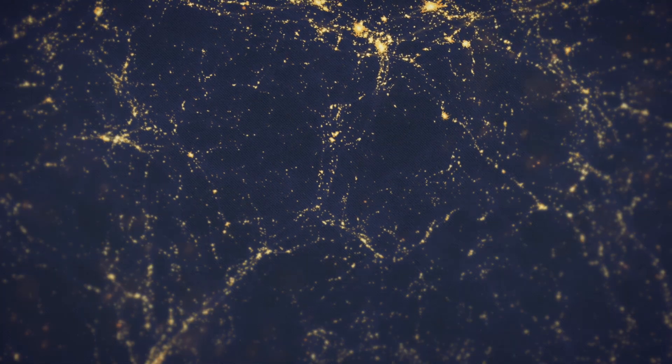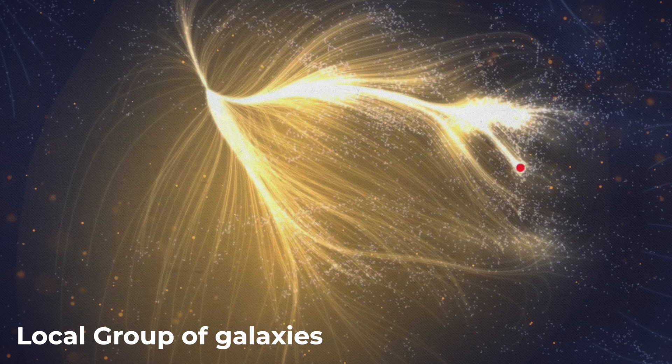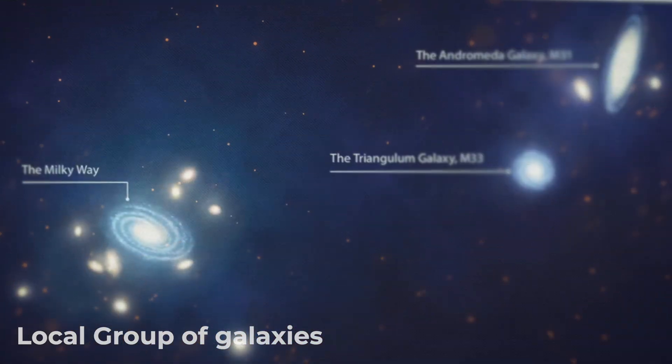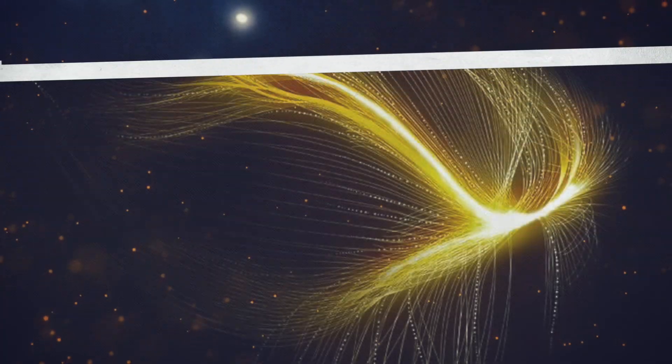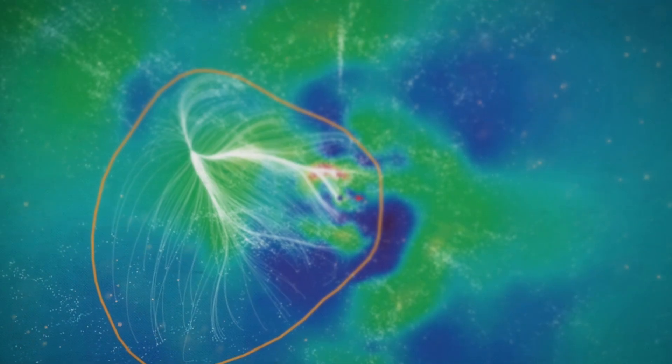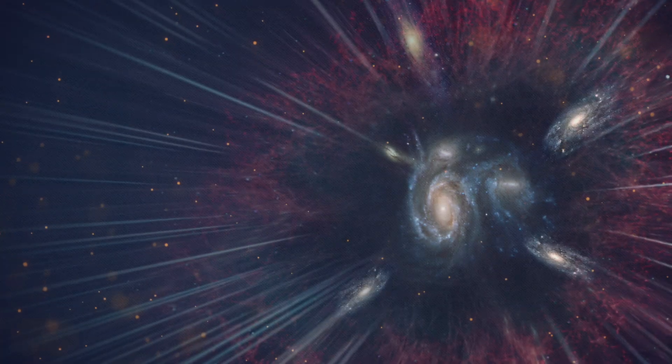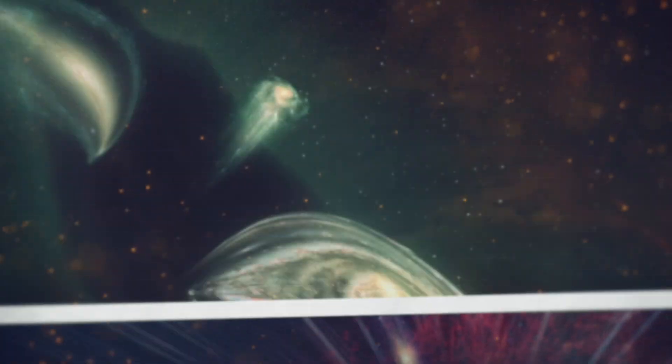One vivid example of this structure is the Laniakea supercluster, which includes our local group of galaxies. Laniakea spans over 500 million light years and contains about 100,000 galaxies. Studies have shown that the Great Attractor is one of the centers of mass in this supercluster, playing a key role in its gravitational dynamics.